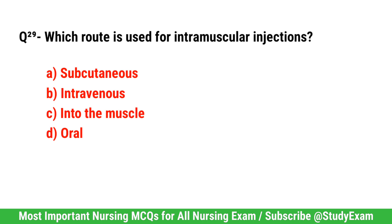Question number 29. Which route is used for intramuscular injections? Correct option is C. Into the muscle.